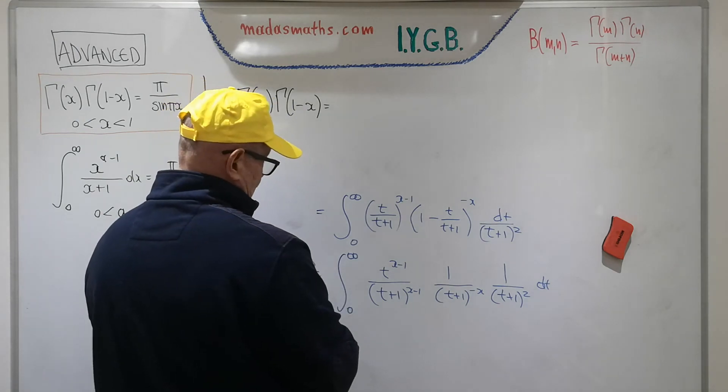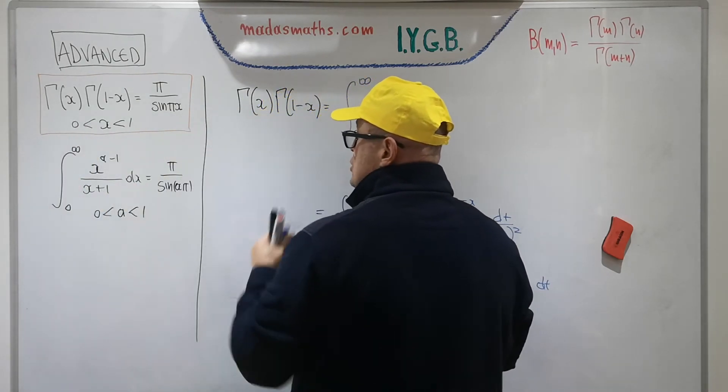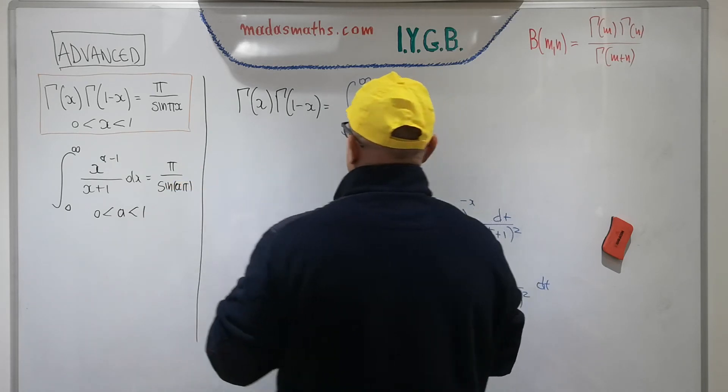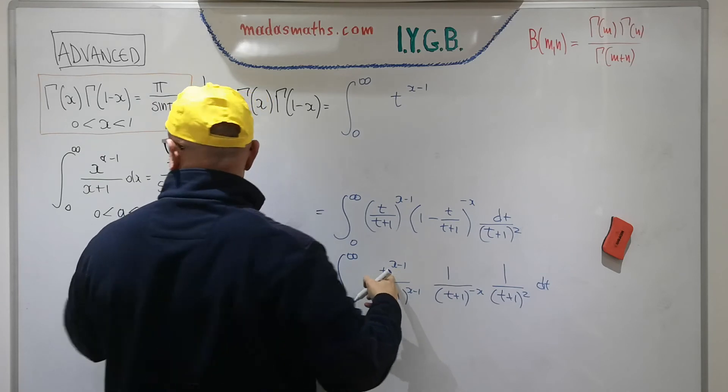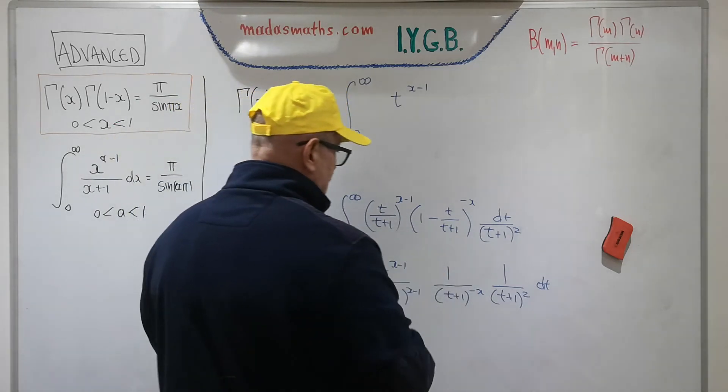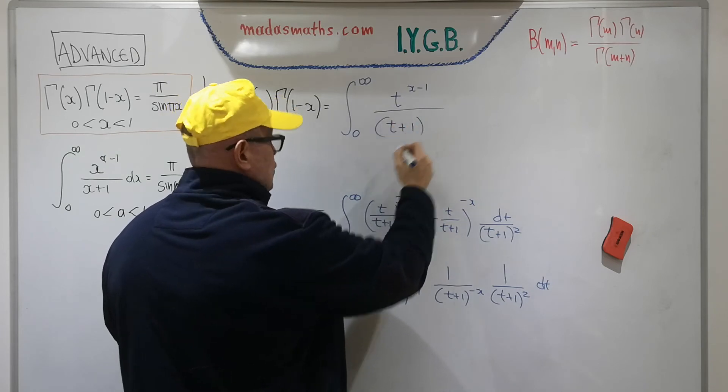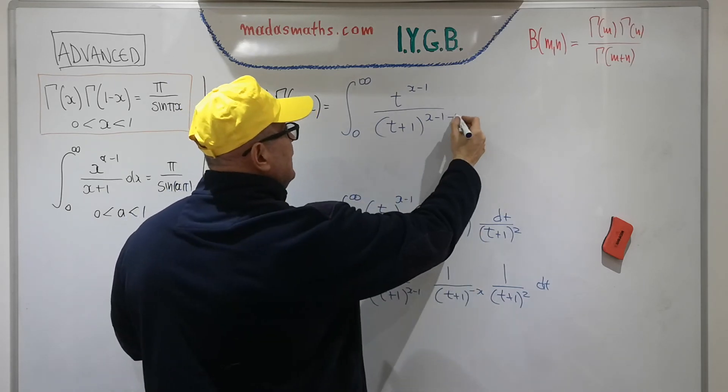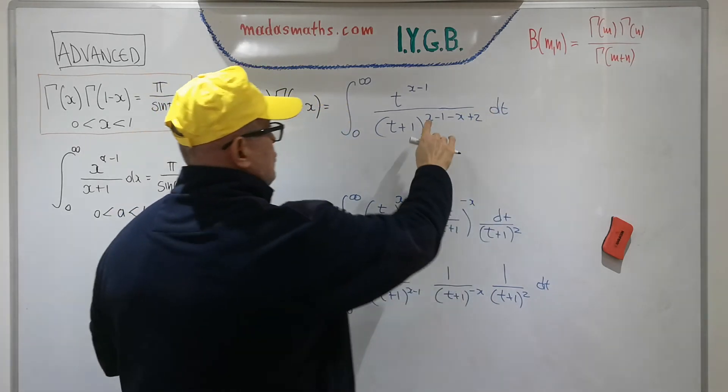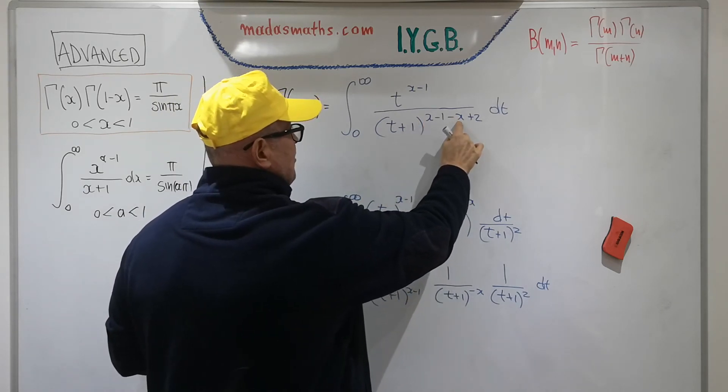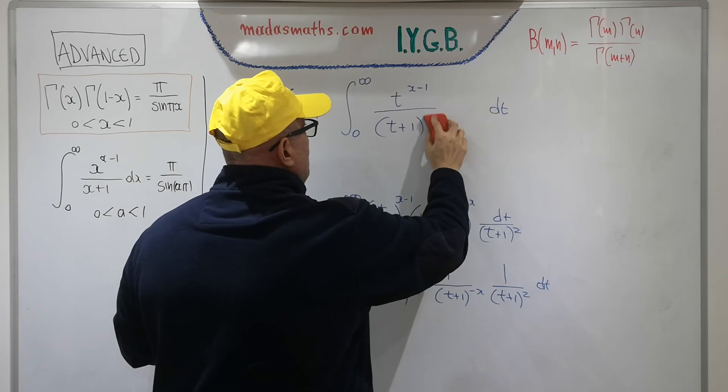This equals the integral from 0 to infinity. On the top, we have t to the x minus 1 from this. On the denominator, I've got loads of t plus 1s, t plus 1 to what power? I've got x minus 1 minus x plus 2 dt. When we look at this exponent, the x and minus x cancel, minus 1 plus 2 is 1, so in fact this is to the power of 1. I'm going to rub all of this off. Let's see if we have our answer.